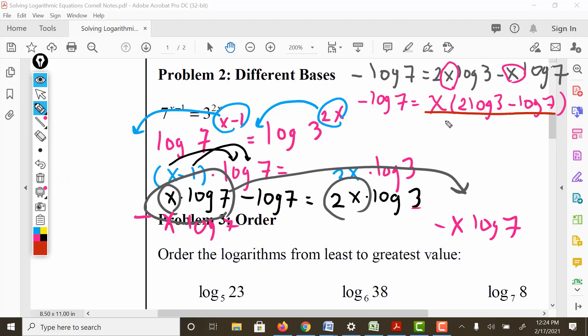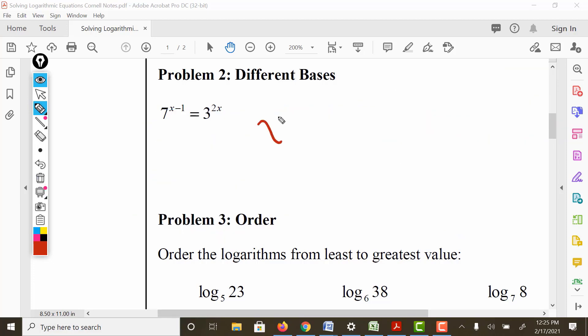This is requiring quite a bit of algebra. You have to be decently comfortable with your algebra. This got really messy, sorry about that. Here's what it looks like: we have x equals negative log 7 over 2 log 3 minus log 7. That's the official answer. If we were to put this in the calculator, we're going to get about negative 7.7 as the answer.